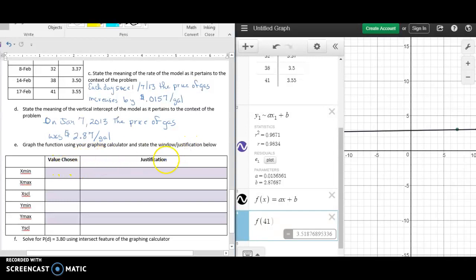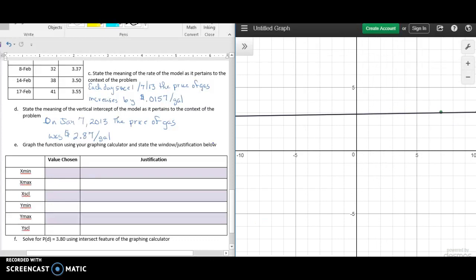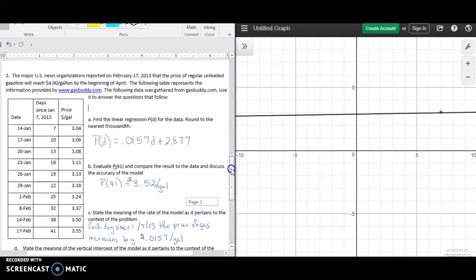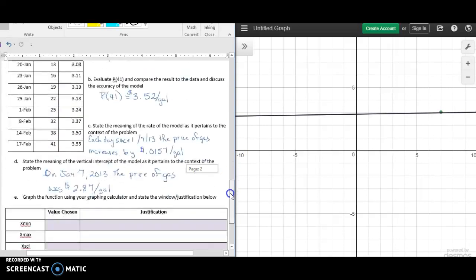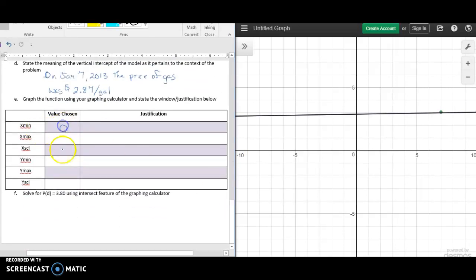Now we want to talk about the window and why we would adjust the window so that we can see. Right now we're only seeing part of our graph in Desmos, and I'm going to minimize that so we can see a little bit more. We want to go back and look at what our data is telling us. Our data is telling us we want our inputs from 7 to 41, so we want to see everything.